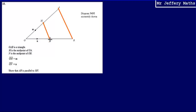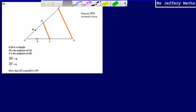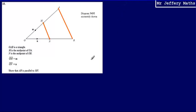The way we are going to show that is by using vectors. To begin with, what I'm going to need to do is work out what the vector MN is.